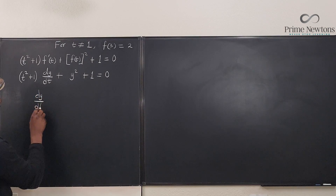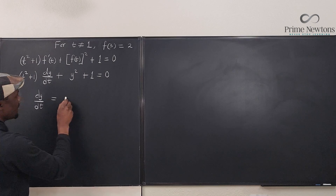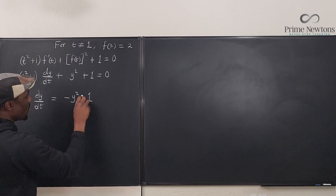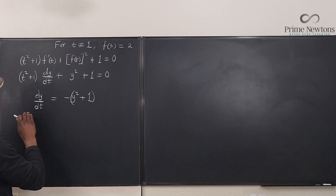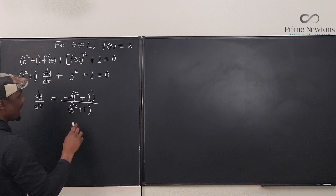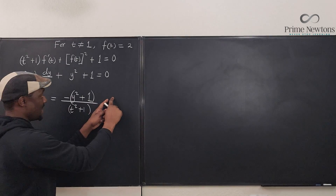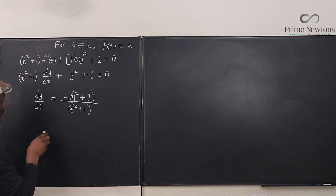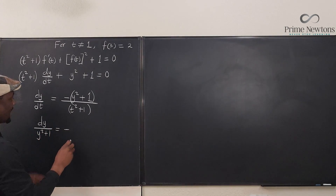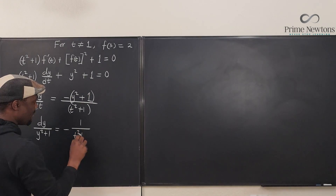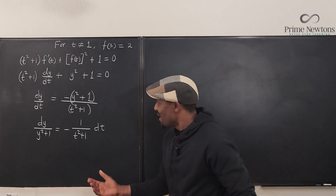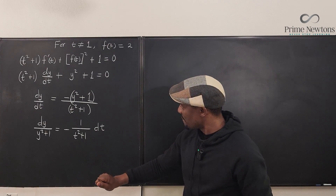dy/dt = −(y² + 1) / (t² + 1). Now I can multiply by dt and bring the y terms to the left, so that dy/(y² + 1) = −dt/(t² + 1). See how easy that became? We're able to separate and rewrite it beautifully.